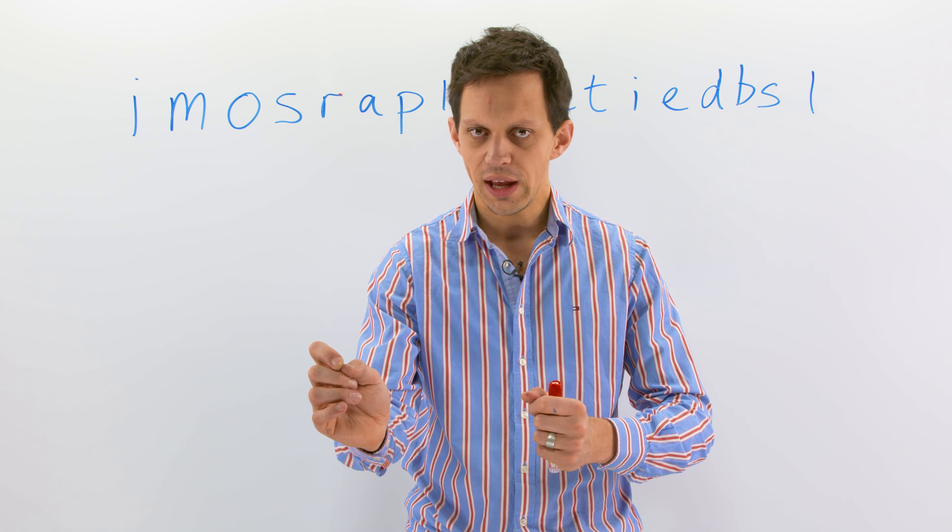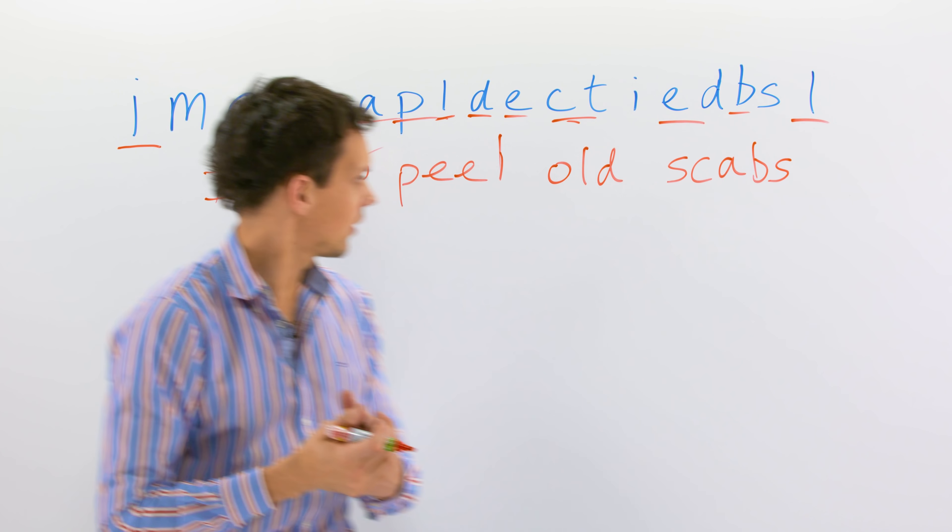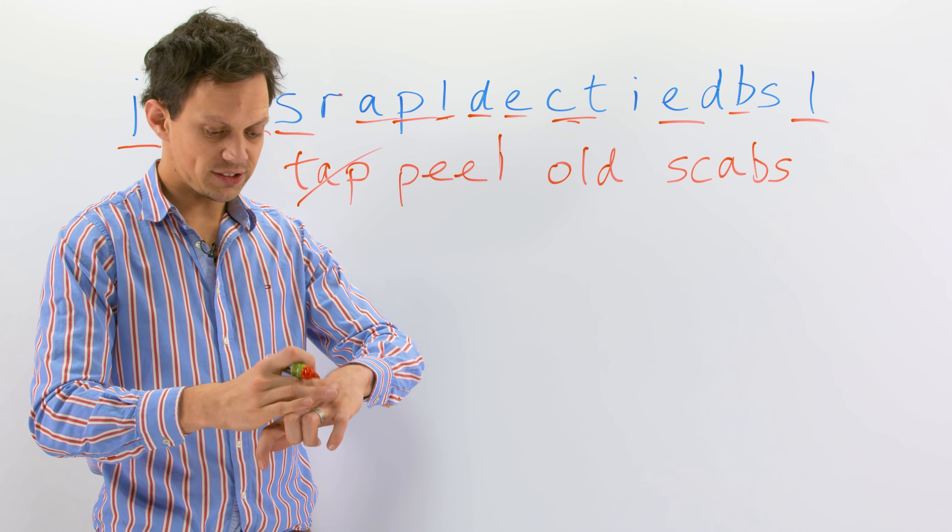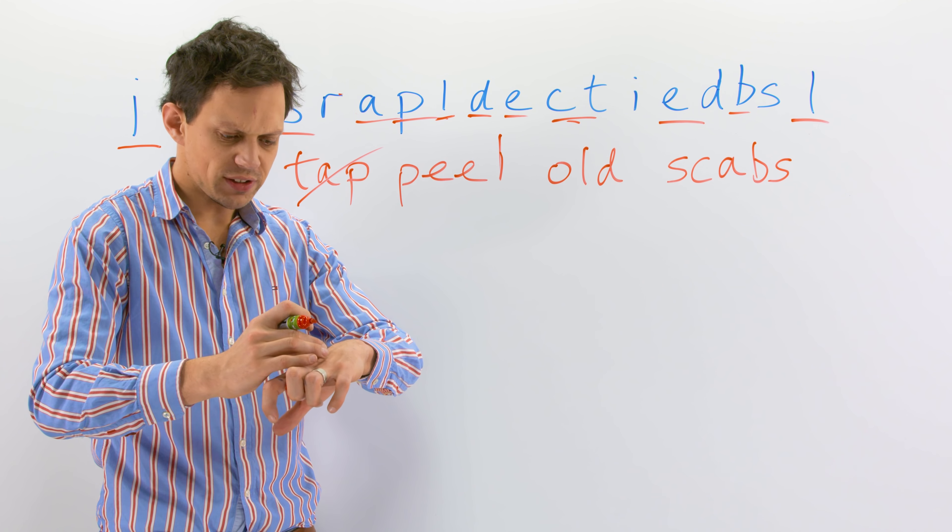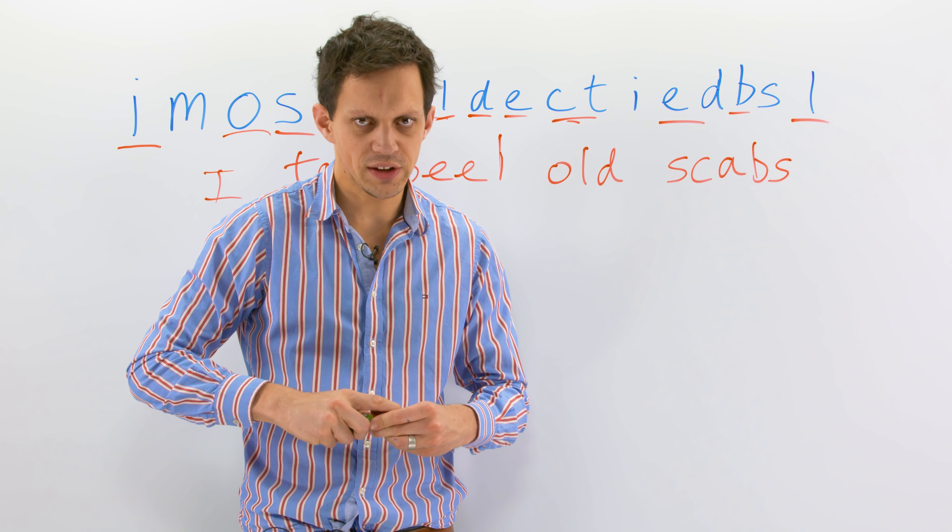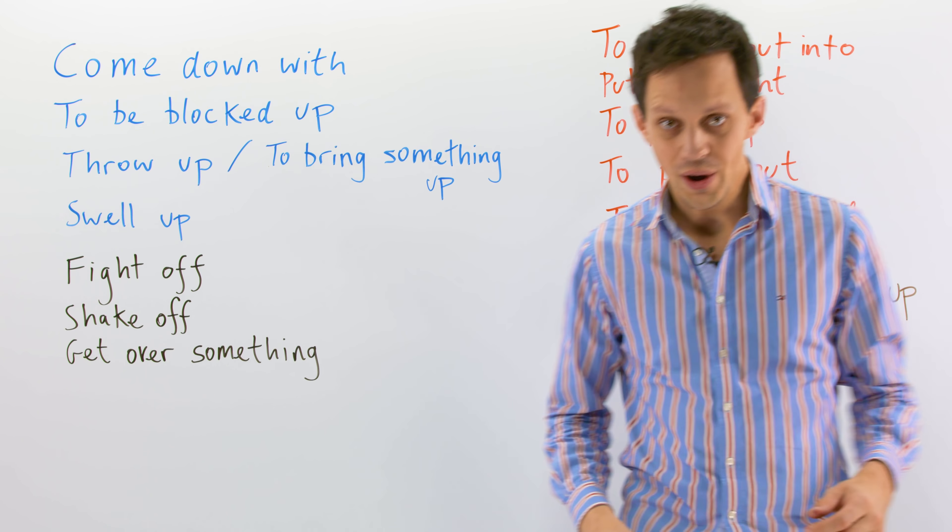And I have an A here, a B there, an S there. Scab. If you fall over and hurt yourself, you might bleed. Your skin then heals itself and you will have what is called a scab. First word in today's health lesson. Let's learn some phrasal verbs. Well done.